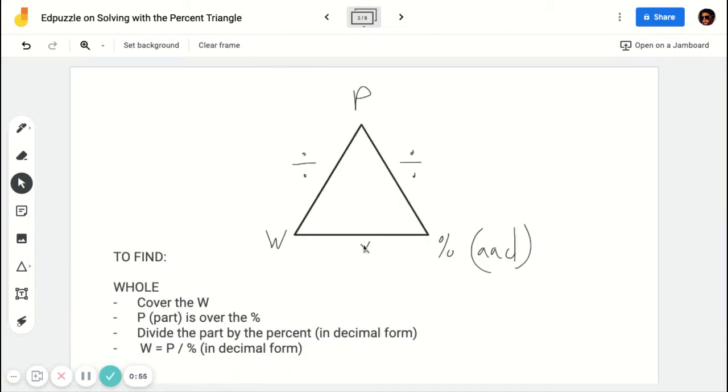If you're looking for the whole, they should give you the part and the percent as a decimal, and then you would just merely divide the part by the percent as a decimal and that would give you the whole answer.